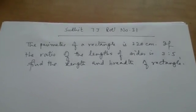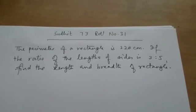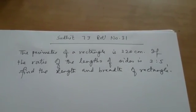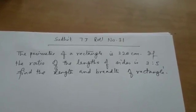Let us read the question. The perimeter of a rectangle is 320 cm. If the ratio of the length of the sides is 3 ratio 5, find the length and breadth of the rectangle.